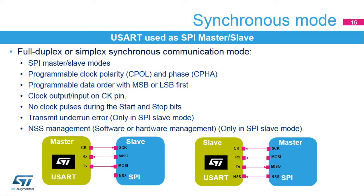The USART can also communicate synchronously. It can operate as an SPI in master or slave mode with programmable clock polarity (CPOL) and phase (CPHA), and programmable data order with MSB or LSB first. The clock is output in master mode or input in slave mode on the CK pin. No clock pulses are provided during the start and stop bits. When configured in SPI slave mode, it supports the transmit underrun error and the NSS hardware or software management.